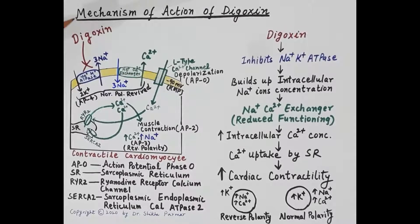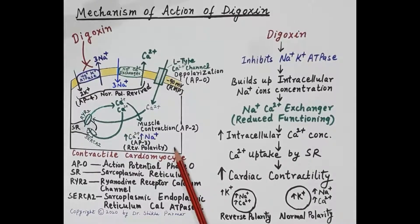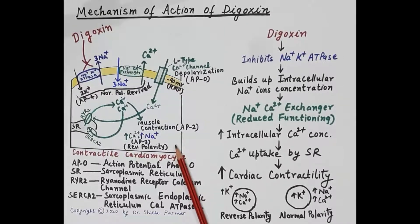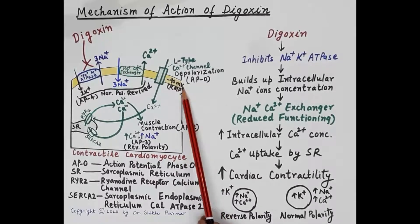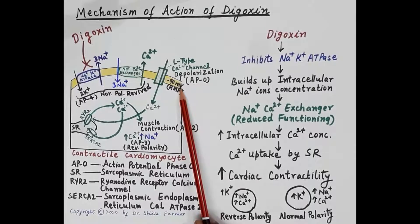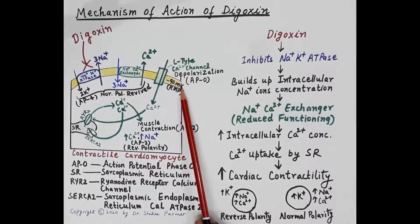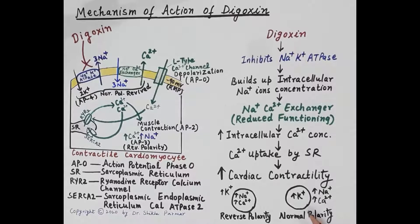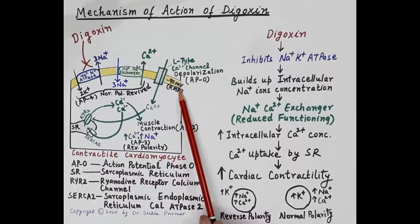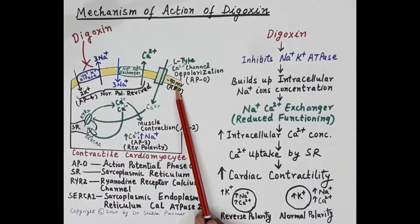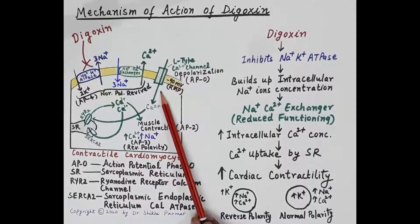Now let's discuss the mechanism of action of digoxin. This figure shows a normal contractile cardiomyocyte. During phase four of the action potential, the resting membrane potential of a contractile cardiac cell is minus 90 millivolts and the cell shows normal polarity, meaning there is more potassium concentration inside the cell while sodium and calcium concentrations are higher outside.